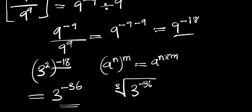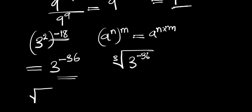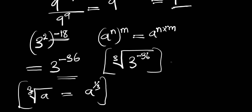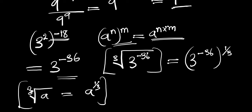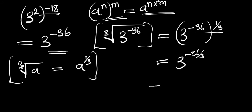So we have 3 to the power of negative 36. Now recall that there was a cube root, so we have the cube root of 3 to the power of negative 36. The cube root of a equals a to the power of 1 over 3. Applying this identity, we get 3 to the power of negative 36, all to the power of 1 over 3. Multiplying out, negative 36 times 1 over 3 gives 3 to the power of negative 36 divided by 3, which equals 3 to the power of negative 12.